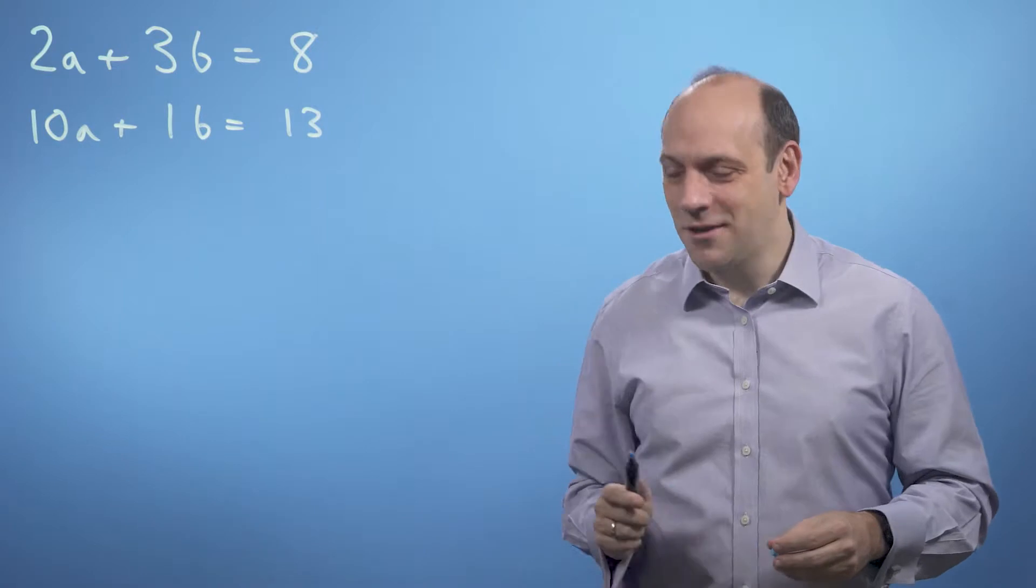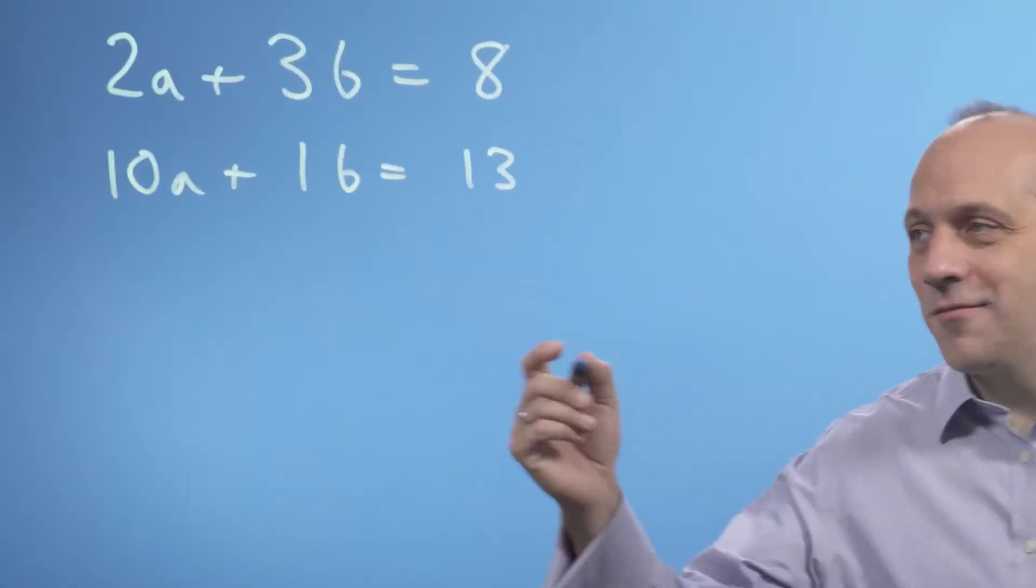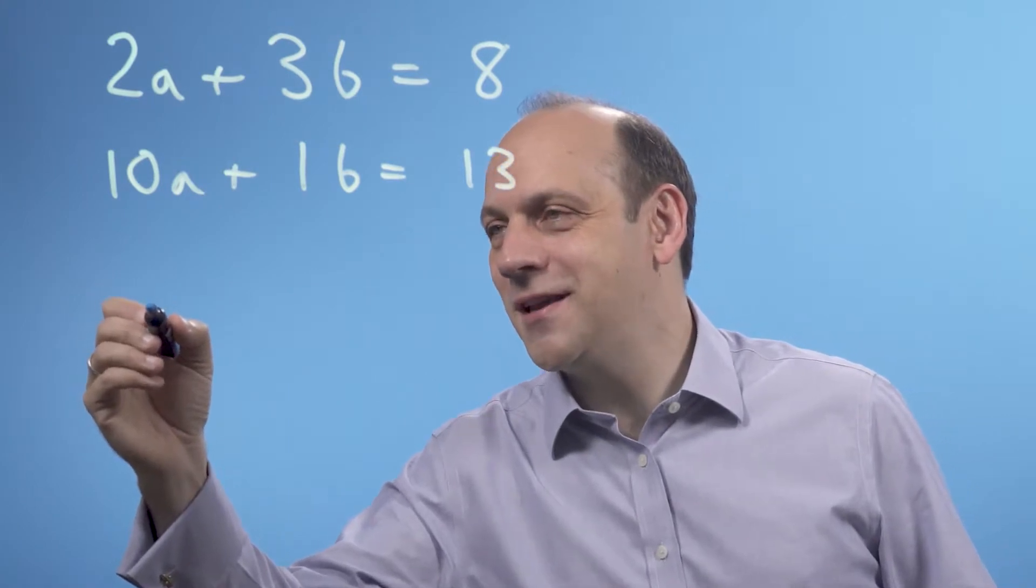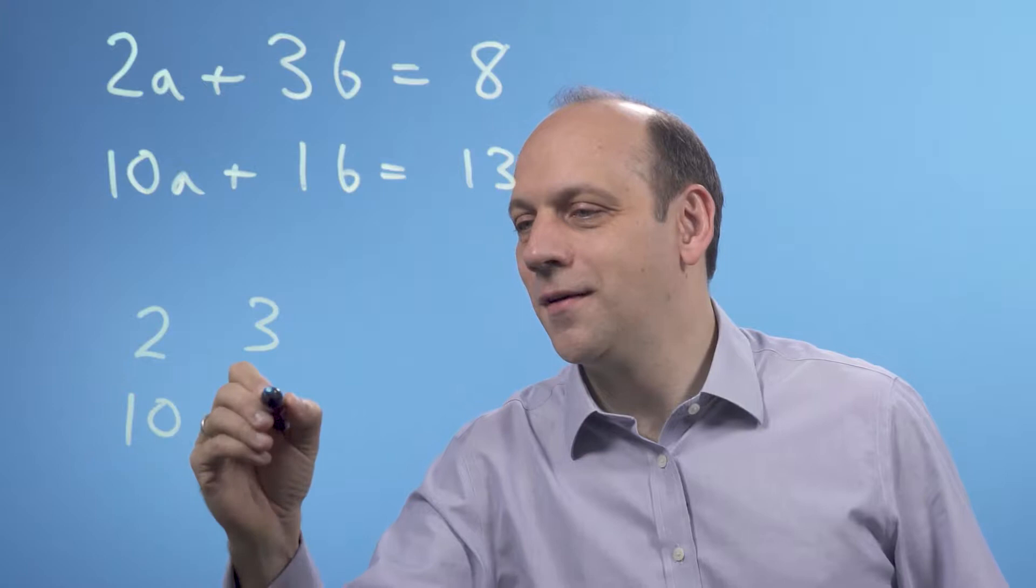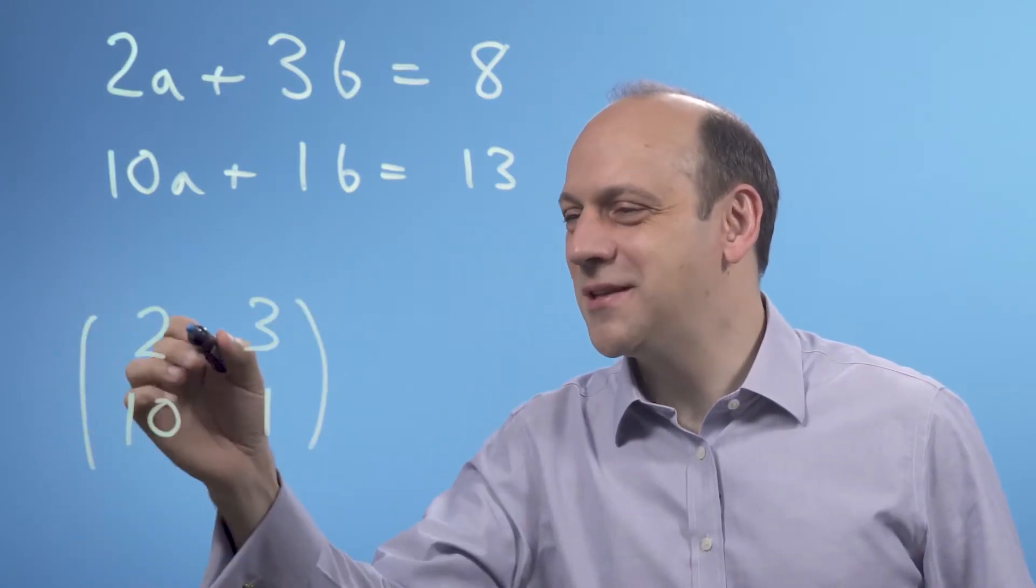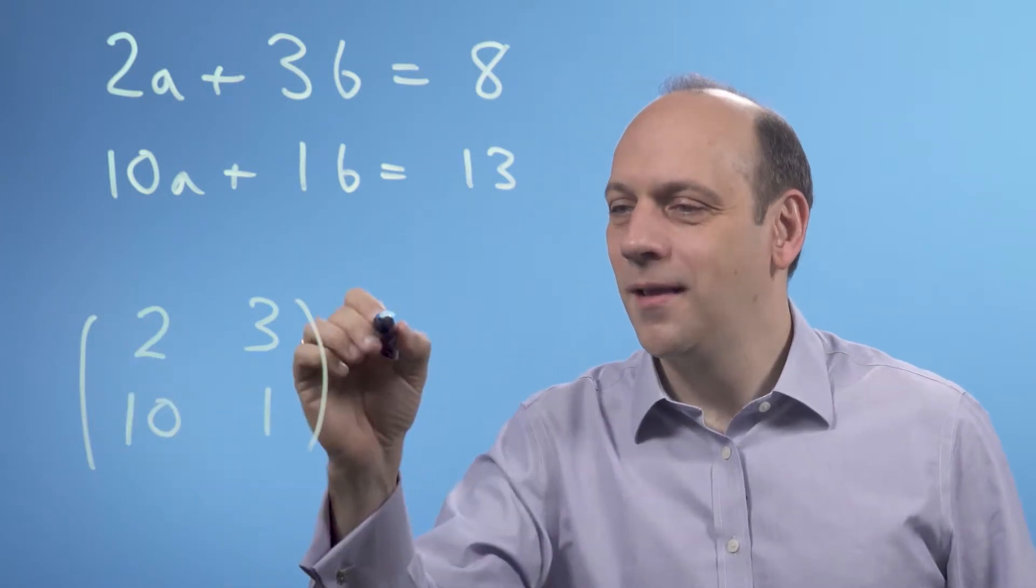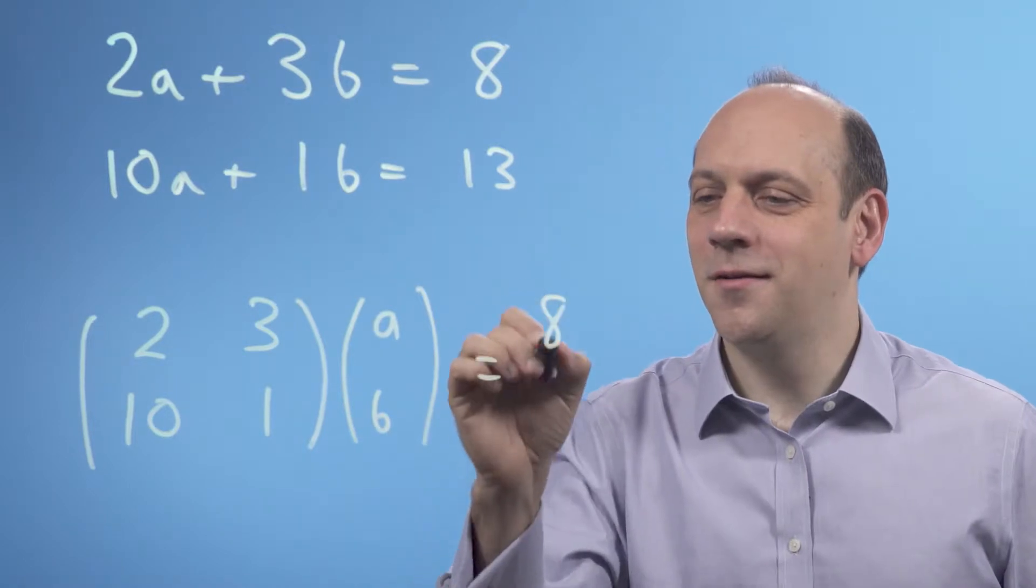Now, these are just simultaneous equations, but I can write them down in another way. So the way I would write this down with matrices would be as follows. So I'd write it down as this matrix, what I'm now calling a matrix, an object with numbers in, 2, 3, 10, 1, times AB equals 8, 13.